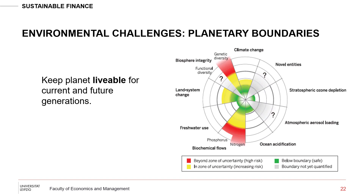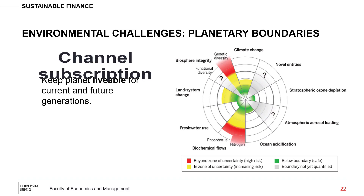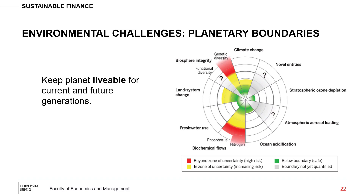We've seen that in a world with limited natural resources, a growing population, and a growing economy, we will encounter some forms of planetary boundaries. For example, we have to keep the planet livable for current and future generations, and we need to think about how to use natural resources and how large the budget for pollution is. On this slide you can see some aspects of these planetary boundaries.